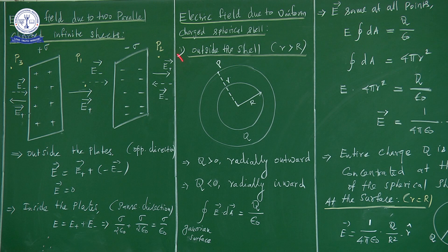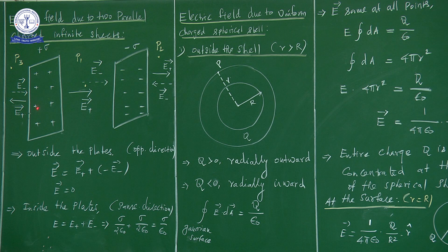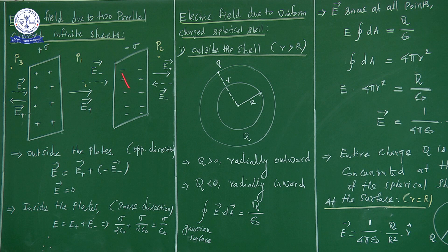The E plus vector and E minus vector are in the opposite direction for the P2 point. Next, consider another point, P3. At the P3 point, the plus charge creates the E plus vector, and the E minus vector is added due to the negative charge. The E plus vector and E minus vector are in the same direction at P3.